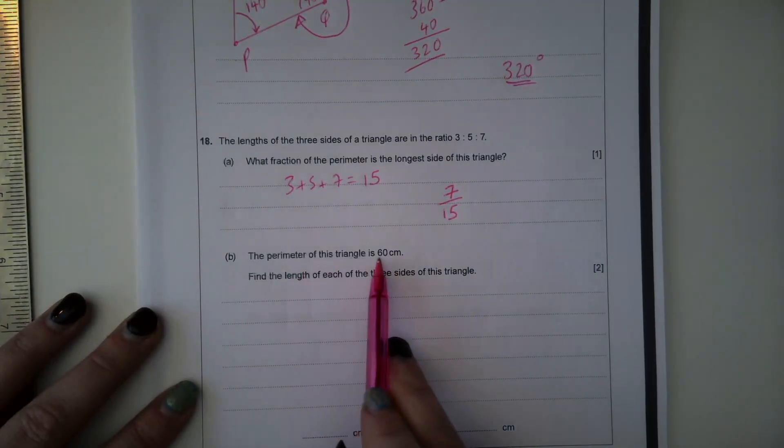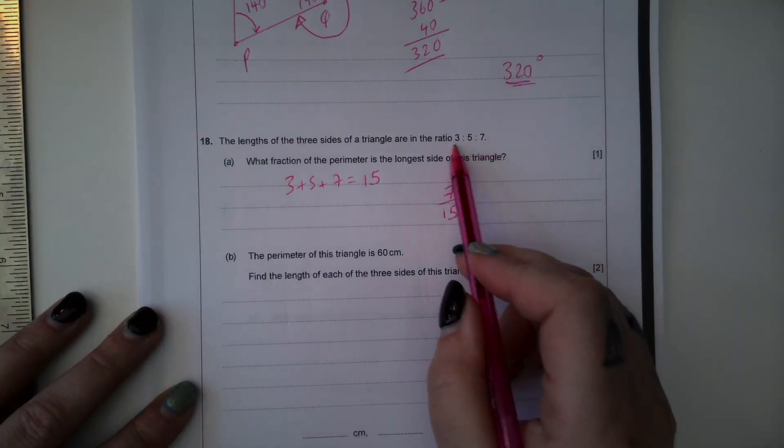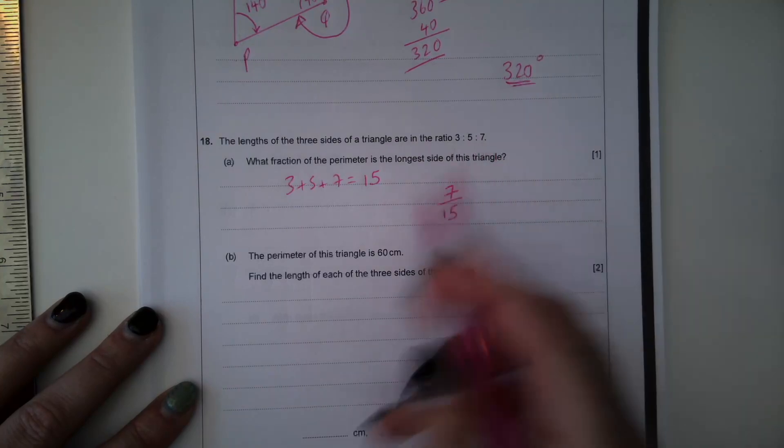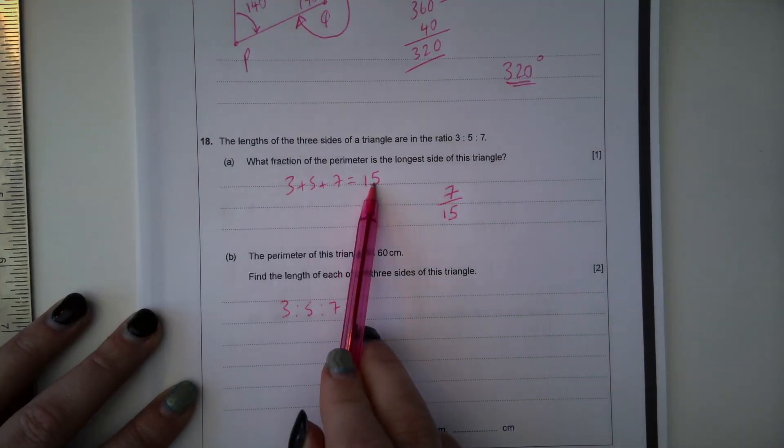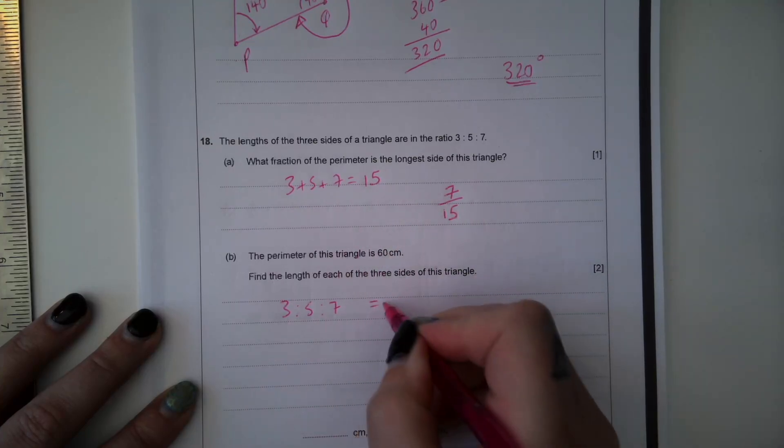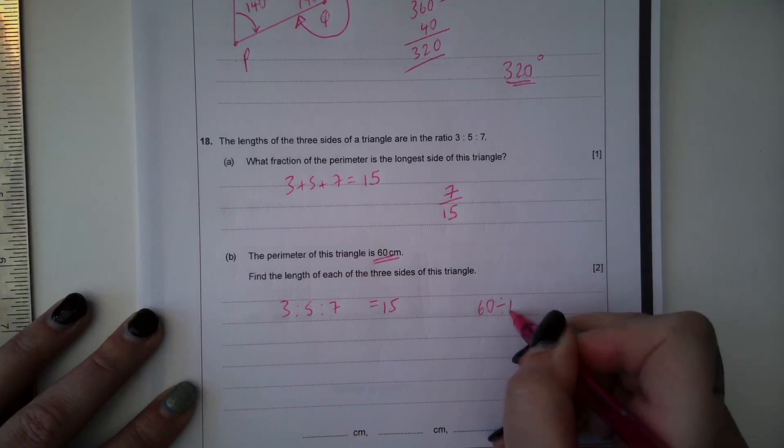The perimeter of this triangle is 60 centimetres. Find the length of each of the three sides of this triangle. So we're going to share into this ratio. Okay, so we're going to share into 3 to 5 to 7. In this part, we already said that they add to 15, so we're going to do 60 divided by 15.